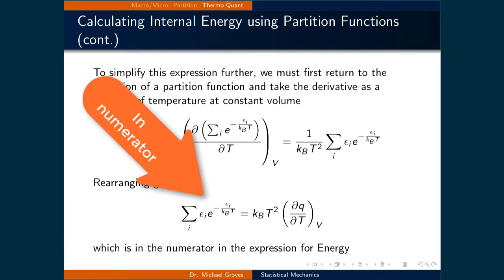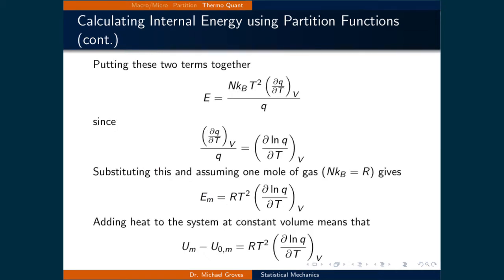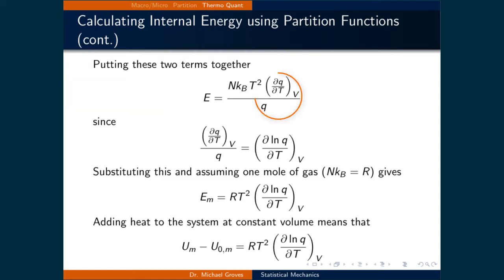The left-hand side of this equation is in the numerator of our current expression. Putting this result in gives E equal to N times the Boltzmann constant times T squared times the partial derivative of Q with respect to T at constant volume, divided by Q. The partial derivative of Q with respect to T divided by Q is another way of expressing the partial derivative of the natural logarithm of Q with respect to T at constant volume.